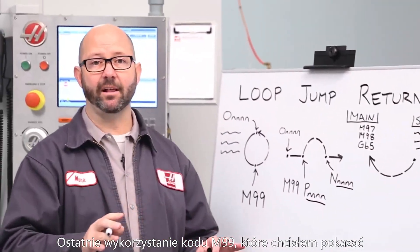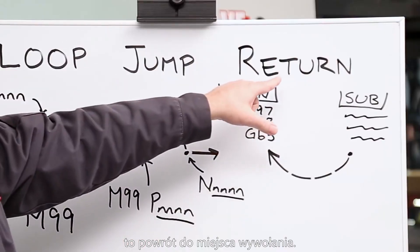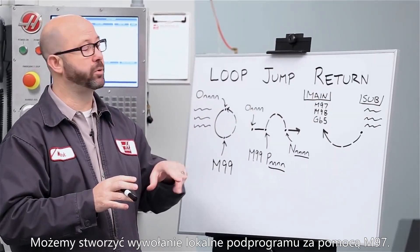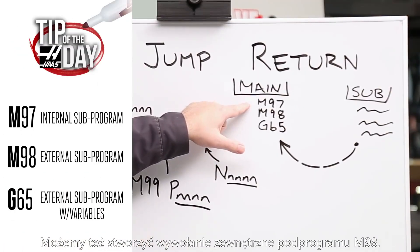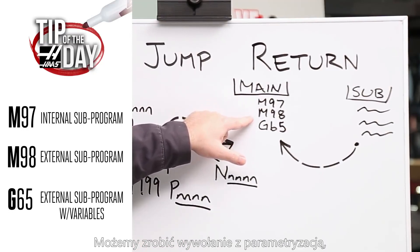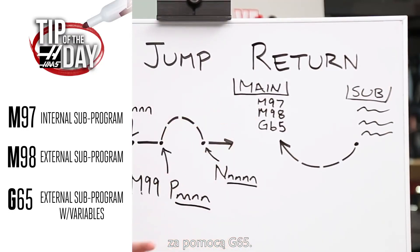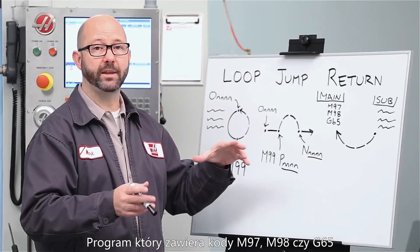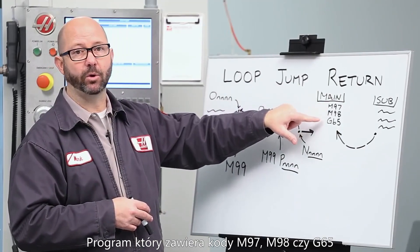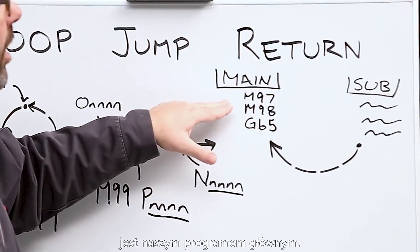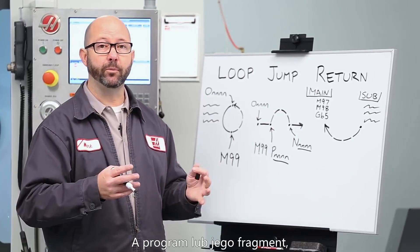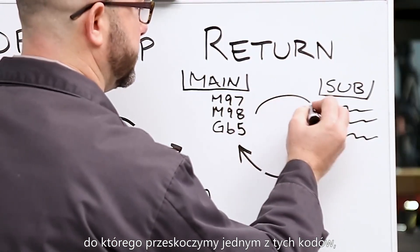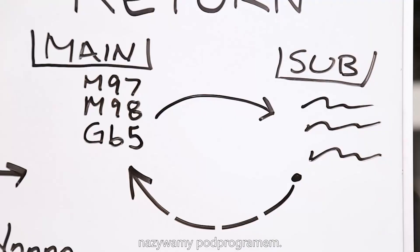The last talent our M99 has to show us is the M99 return. We can call up an internal sub program with an M97, we can call up an external sub with an M98, and we can call up an external sub that can transfer macro variables with a G65. The program that contains our M97, M98, or G65 is known as our main program, and the program or program segment that we're going to jump to with these codes is known as our sub program.